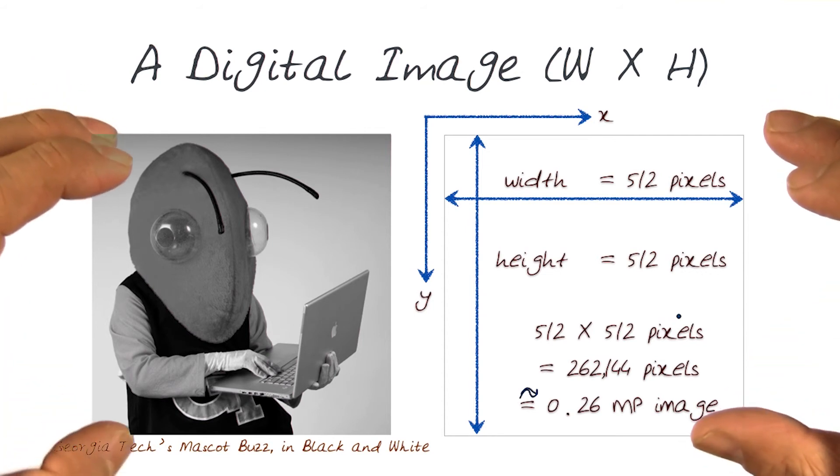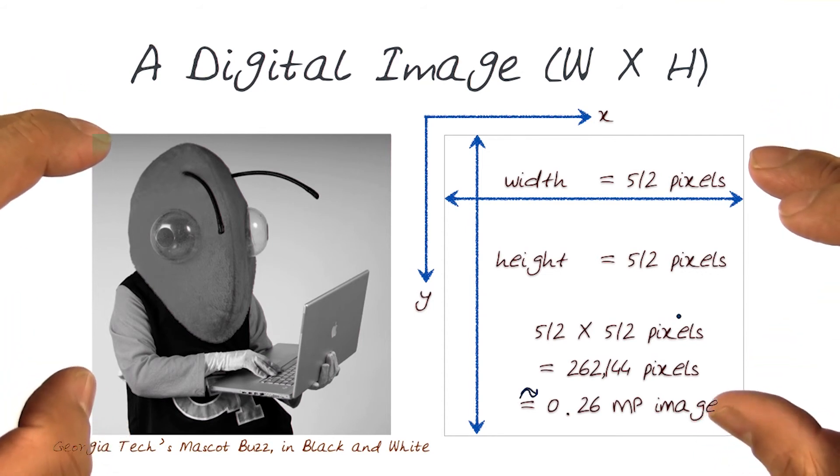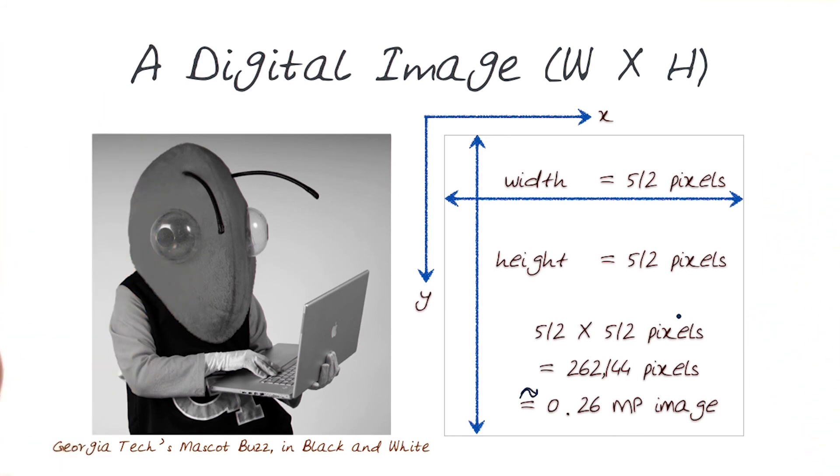So this is basically one of the simplest ways of representing an image, where we need to know the width and the height and how we'd be traversing it.